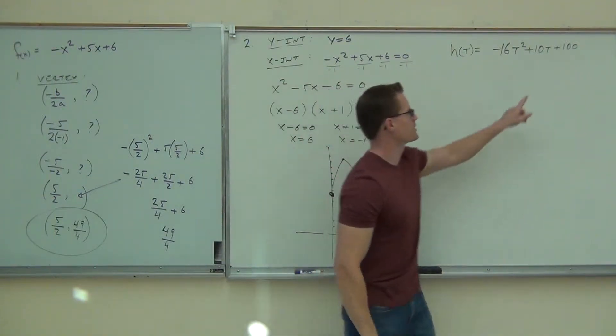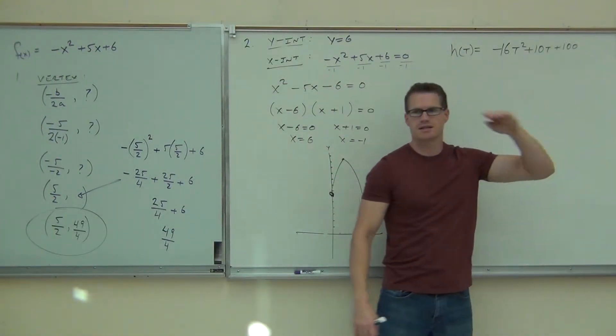So, the height of the rocket initially is given by 100 feet. Whatever the constant is, that tells you how high you started.